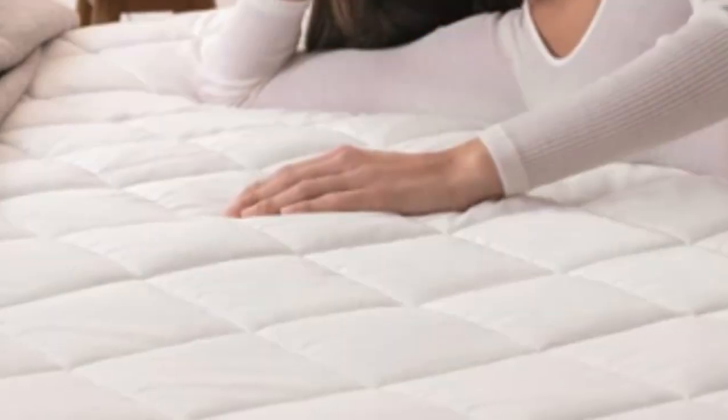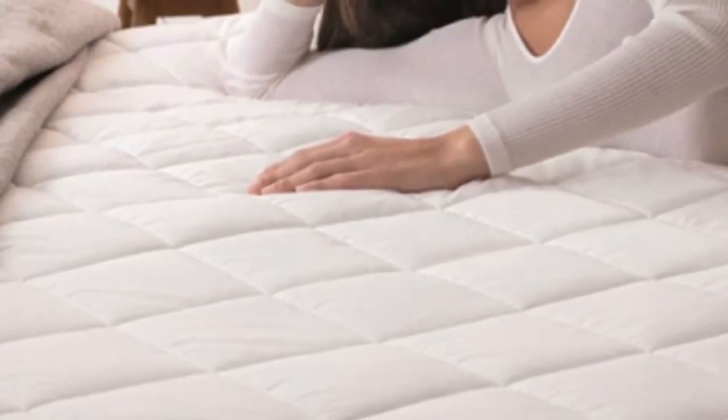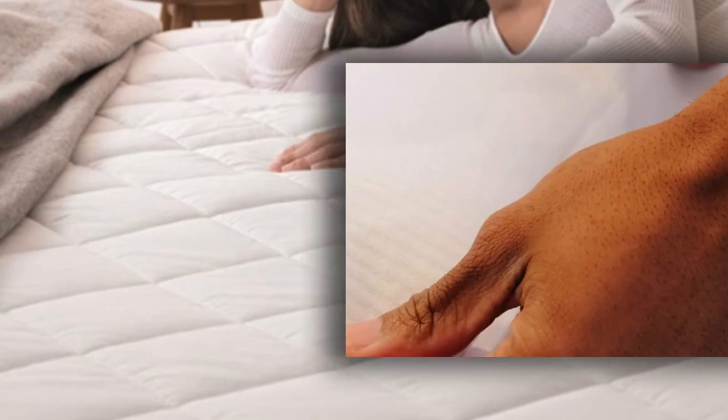Down-alternative fiber fills the mattress pad's interior, adding cushioning to the surface without changing the overall feel of your mattress.